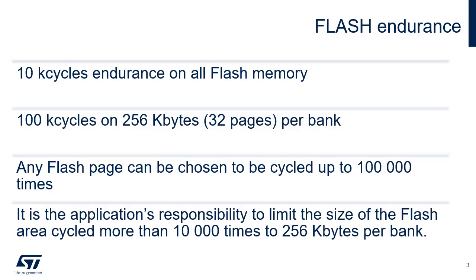Each program erase operation can degrade the flash memory cell. After an accumulation of program erase cycles, memory cells can become non-functional causing memory errors. Endurance is the maximum number of erased programming sequences that the flash memory can support without affecting its reliability. 256 KB, 32 pages per bank, feature an increased endurance of 100 kilocycles that can be used for data storage that usually needs more intensive cycling capability than code storage. Any flash page can be chosen to be cycled more than 10,000 times up to 100,000 times. It is the application's responsibility to limit the size of the flash area cycled more than 10,000 times to 256 KB per bank.